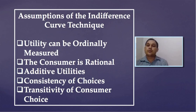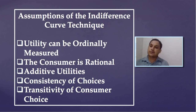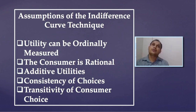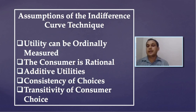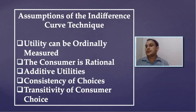Next is transitivity of consumer preferences. It implies that if a consumer prefers combination A over B and combination B over combination C, then the consumer must prefer combination A over combination C. That means if A is greater than B and B is greater than C, then A must be greater than C.